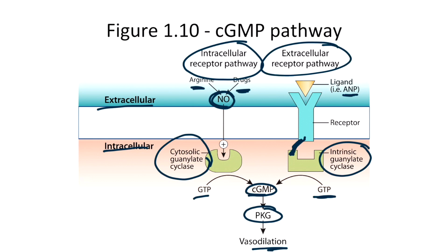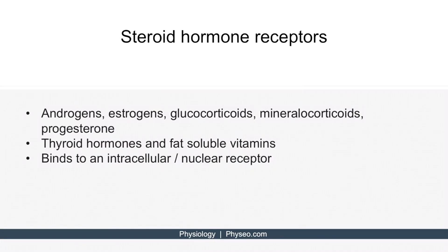Let's move on to a few other signaling pathways. The next topic is steroid hormone receptors. Ligands that bind to these receptors include androgens, estrogens, glucocorticoids, mineralocorticoids, and progesterone. While thyroid hormones and fat-soluble vitamins are not considered steroids, they act very similar to steroid hormones by binding to intracellular or nuclear receptors. Just remember that steroids and steroid-like molecules bind to intracellular and intranuclear receptors, which ultimately regulate transcription.